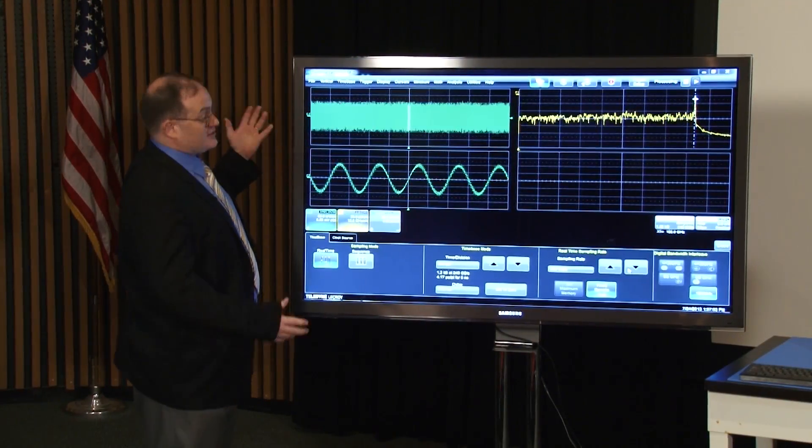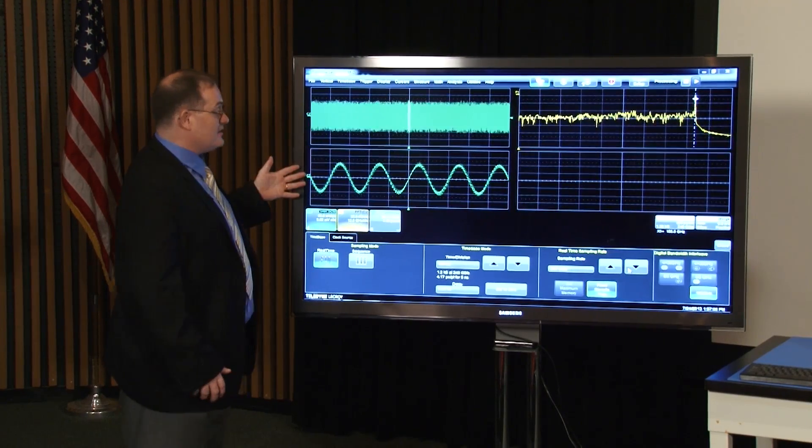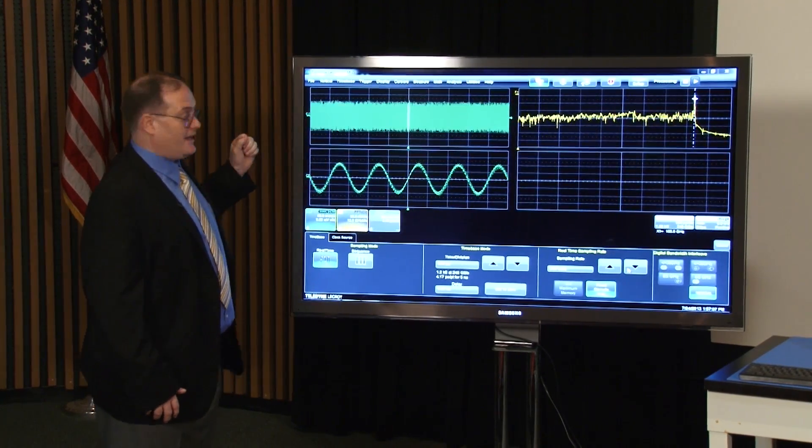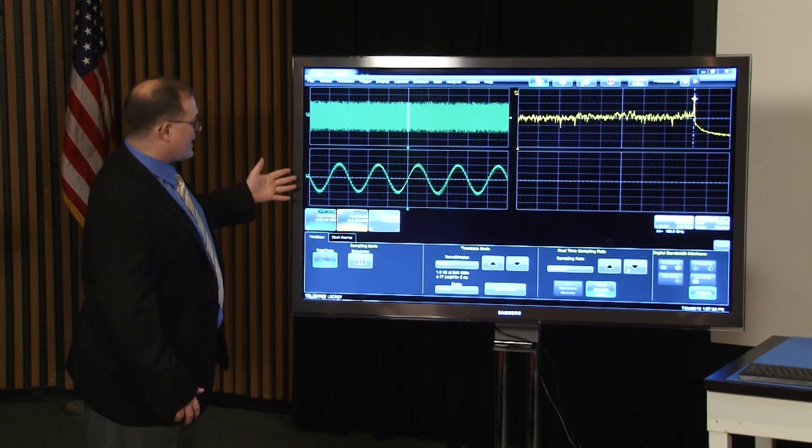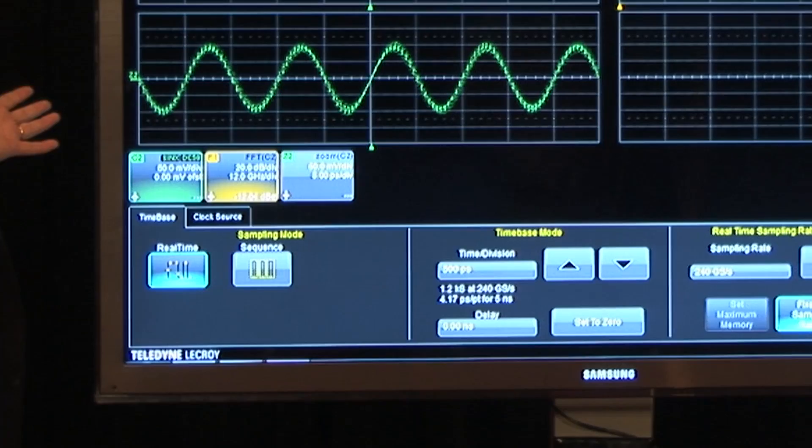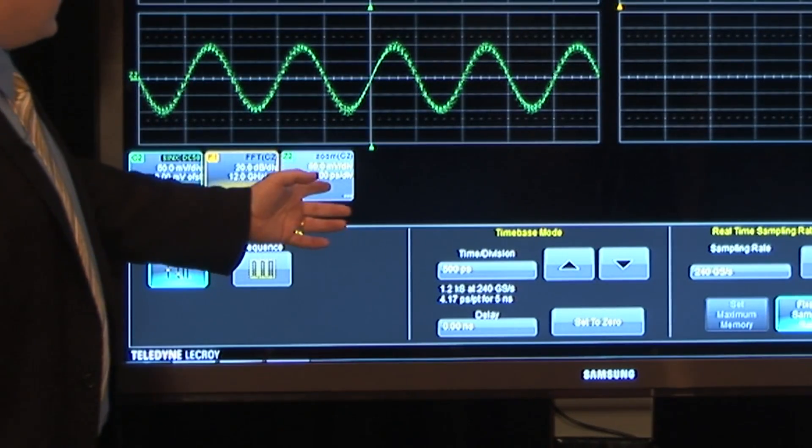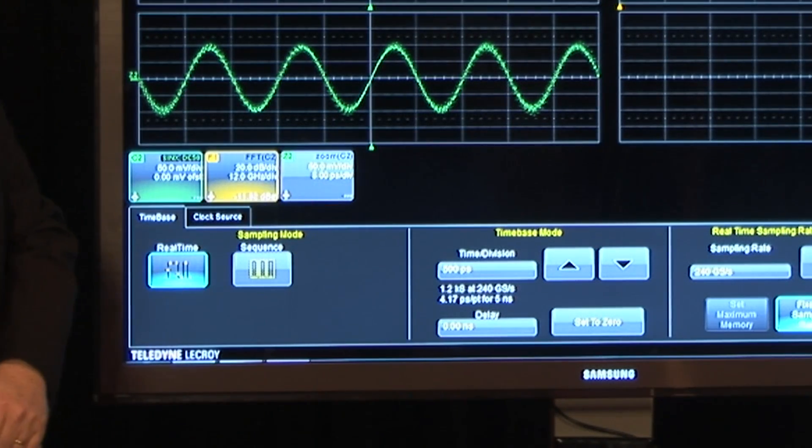The first display is an interesting display as nobody sees anything. The second display is a zoom of the first display, and we are actually seeing a sine wave. This sine wave is acquired on a scale of 5 picoseconds per division.